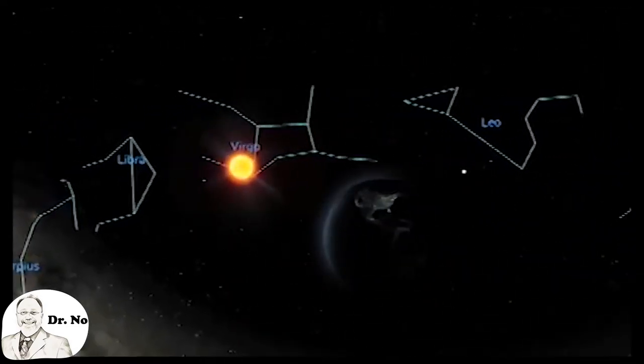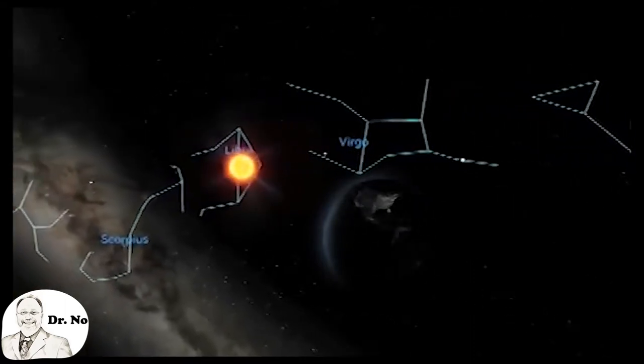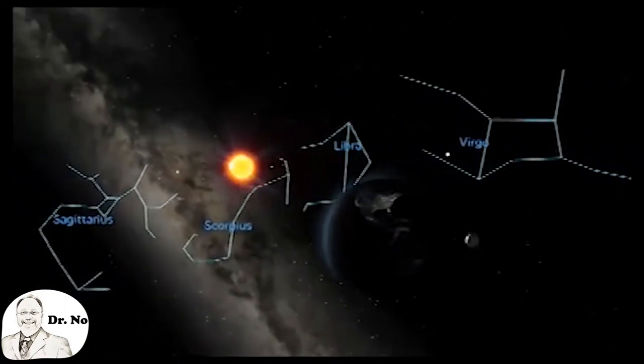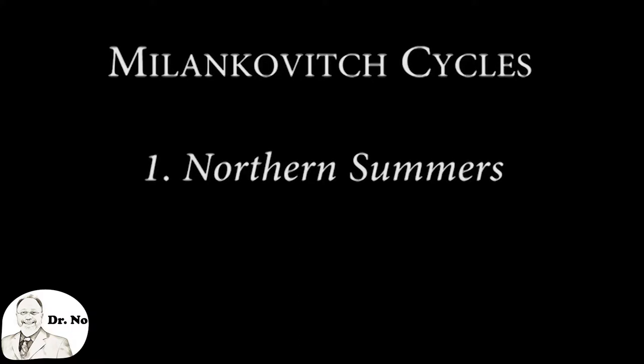Milankovitch realized that because two-thirds of Earth's land is located in the Northern Hemisphere, insolation, the amount of sunlight, in the hemisphere should dominate the occurrence of warm and cold climate periods.